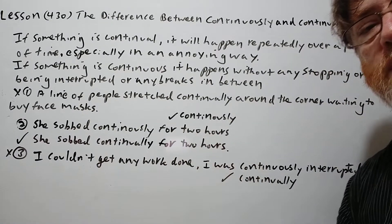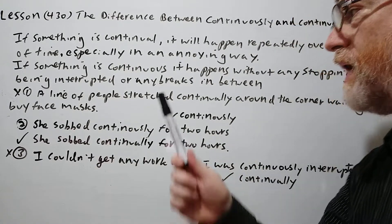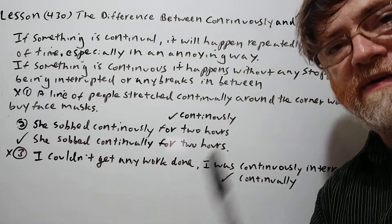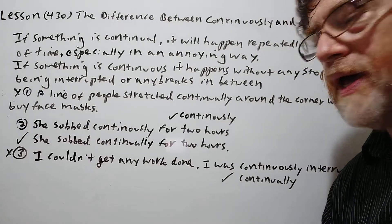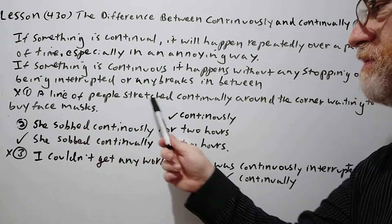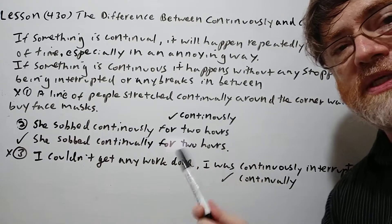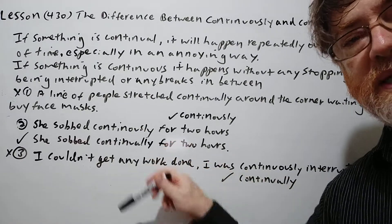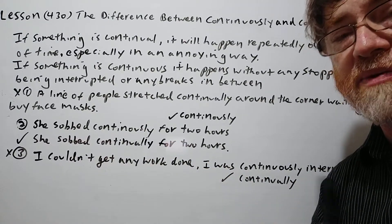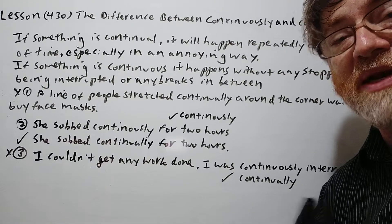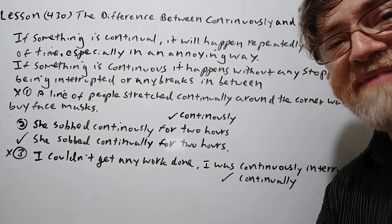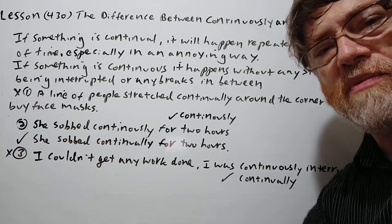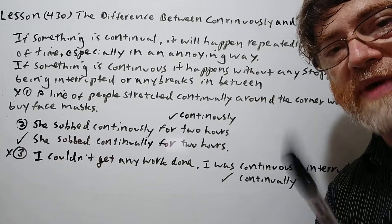Let's look at the first example. With the X, this would be wrong: "A line of people stretched continually around the corner waiting to buy face masks." Here you're more likely to say stretched continuously around the corner. You really want to emphasize that it was a long line with no breaks. You wouldn't say continually unless it annoyed you. Here you're just talking about the line itself, so continuously is the better word.